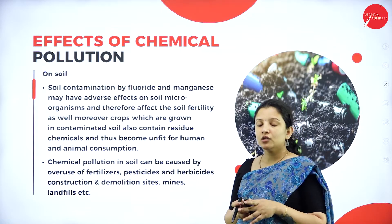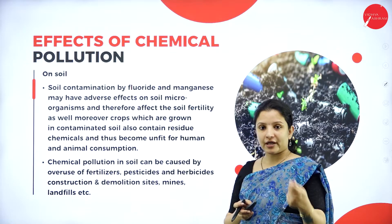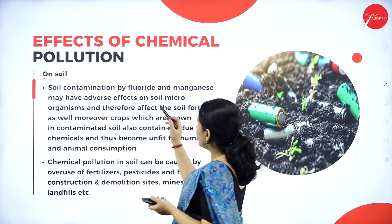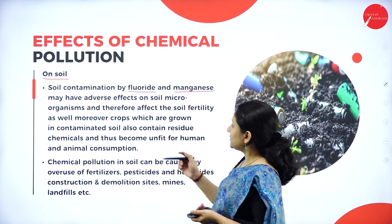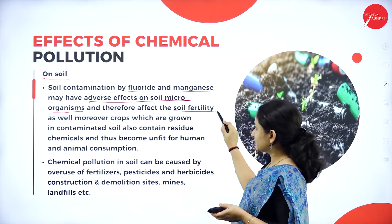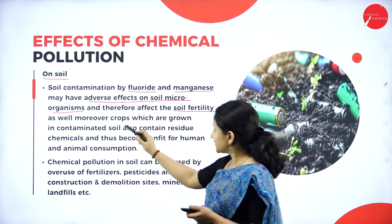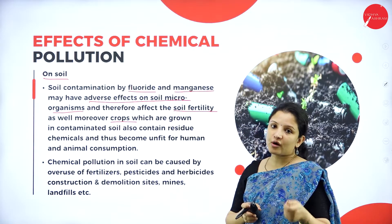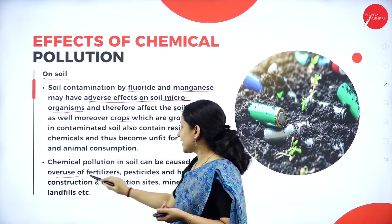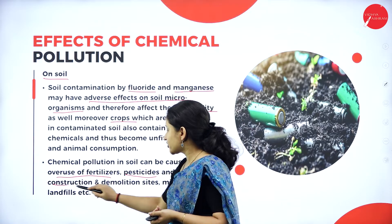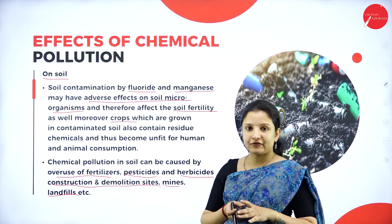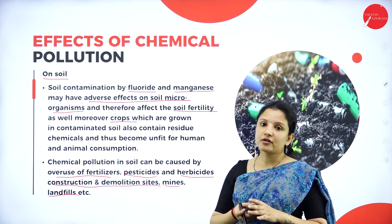Now let's look at the effects of chemical pollution. The contamination of soil by fluoride and manganese has an adverse effect on soil microorganisms. If soil microorganisms are affected, it can affect the fertility of the soil, and if fertility is affected, then crops will be affected and become unfit for human consumption. Chemical pollution in soil can be caused by overuse of fertilizers, pesticides and herbicides, construction and demolition sites, mines, landfills, etc., which can have quite a lot of effect on the soil and in turn on human beings.